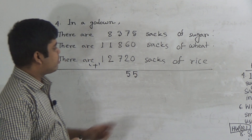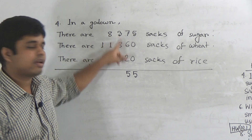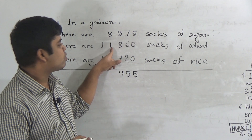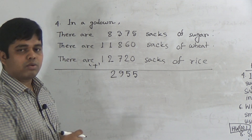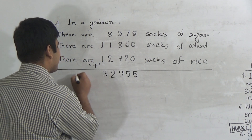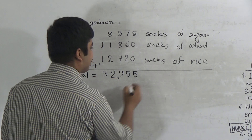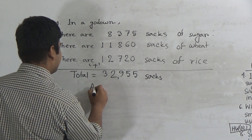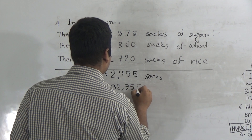That 1 is added with 7 and it will be 8. 8 and 8 is 16, plus 3 is 19. From 19, I write here 9, carry 1. That 1 is added with 2 and it will be 3. 3 plus 1 is 4, plus 8 is 12. From 12, I write here 2, carry 1. That 1 is added with 1 and it will be 2. 2 plus 1 is 3. So, total equals 32,955 sacks. The answer is 32,955 sacks.